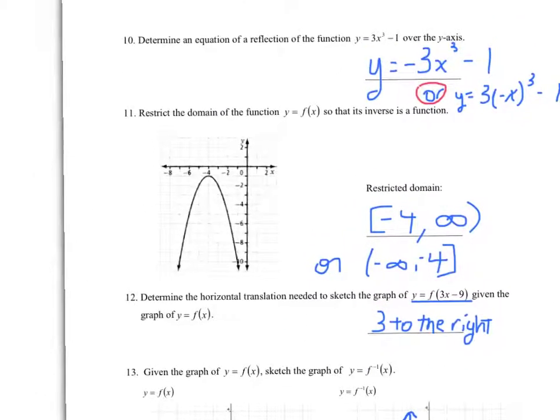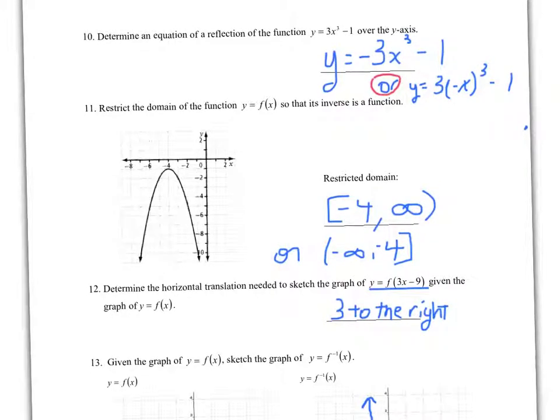Okay, on the last page here, we're going to take a look at a few more questions. So 10, determine an equation for the reflection of the function over the y-axis. So over the y-axis is important here. Over the y-axis is a horizontal reflection. It's of the form y equals f of negative x. So we must replace x with negative x.